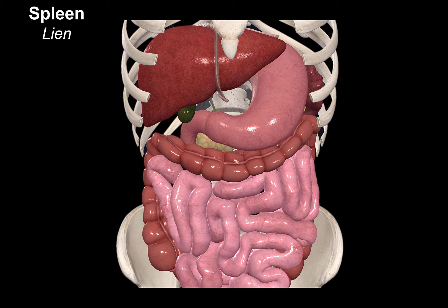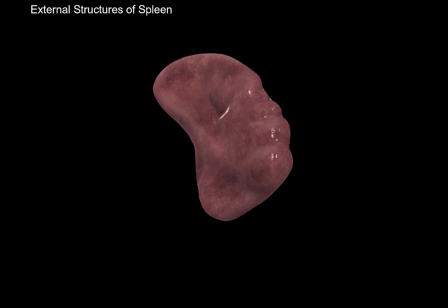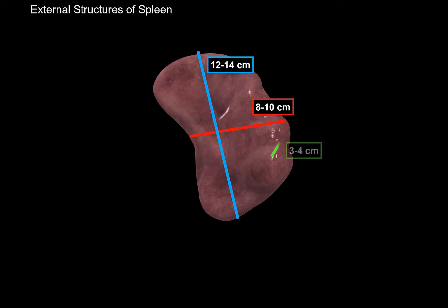The Latin name for the spleen is 'lien,' and it's located on the left side of the abdominal cavity — the complete opposite side of the liver. The spleen is about 12–14 cm long, 8–10 cm wide, and 3–4 cm thick. In contrast to all other organs in the abdominal cavity, it is very small — much smaller than other organs — and it weighs around 140–200 grams.